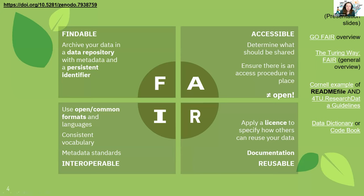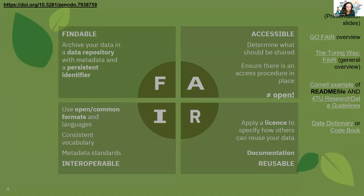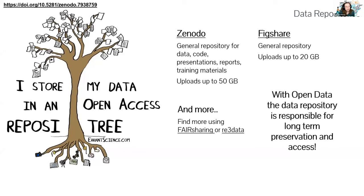How do we achieve FAIR? If you share your data in a data repository, you're almost there — though you do need to work on documentation, because repositories won't do that for you. They provide a persistent identifier, long-term storage, and access procedures. Examples include Zenodo, which I used to share these slides — a general repository for data, code, reports, and training materials up to 50 gigabytes — and Figshare, also a general repository with slightly less space.